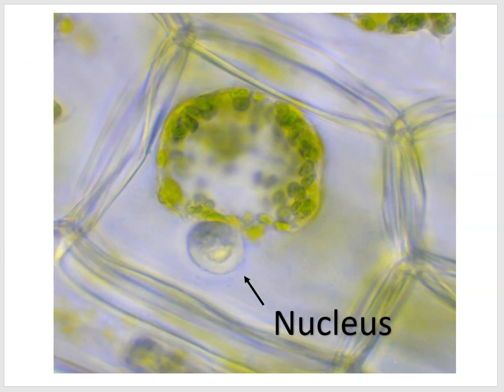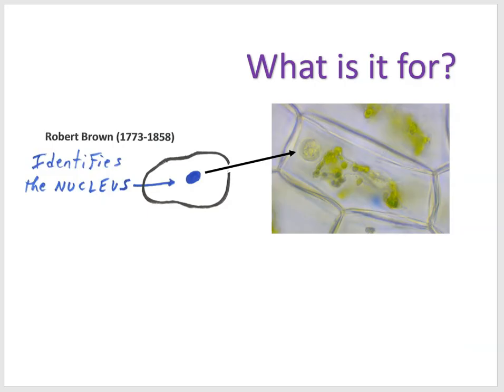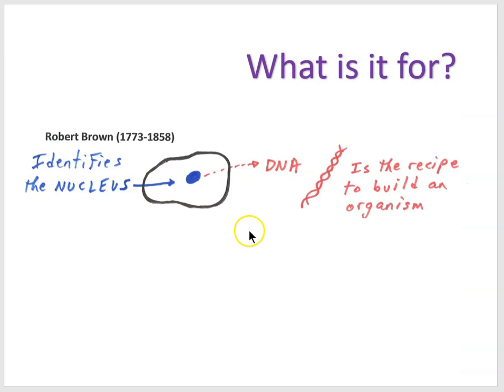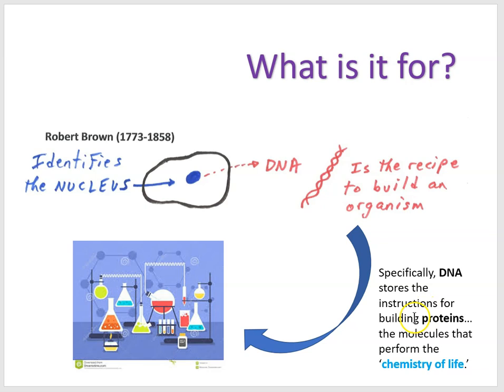Back to this picture: during the shriveling process, the nucleus found its way outside of the cell membrane, separated from the rest of the cell contents. Today we understand the nucleus is a membrane within which is a very important molecule called DNA — the recipe to build an organism. Specifically, DNA stores instructions to build proteins, and it's proteins that perform the chemistry of life.